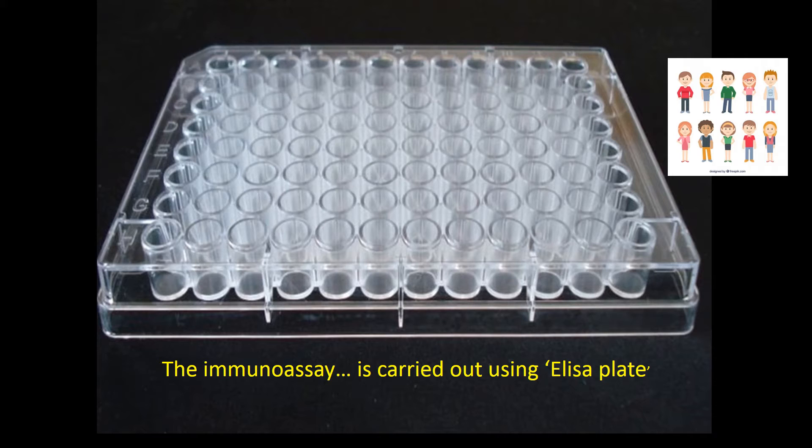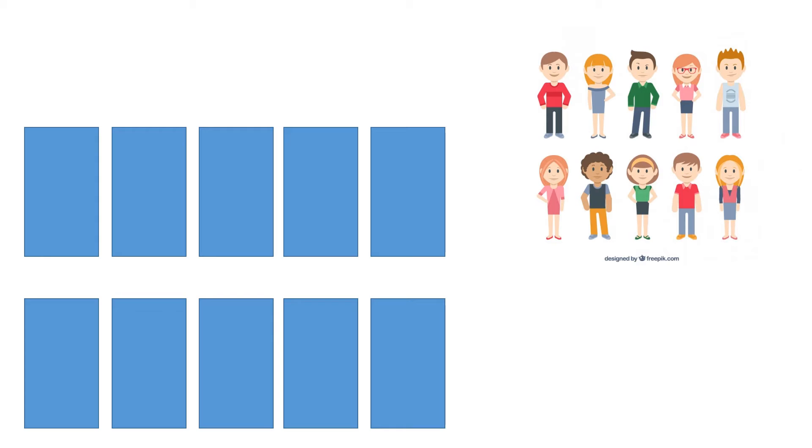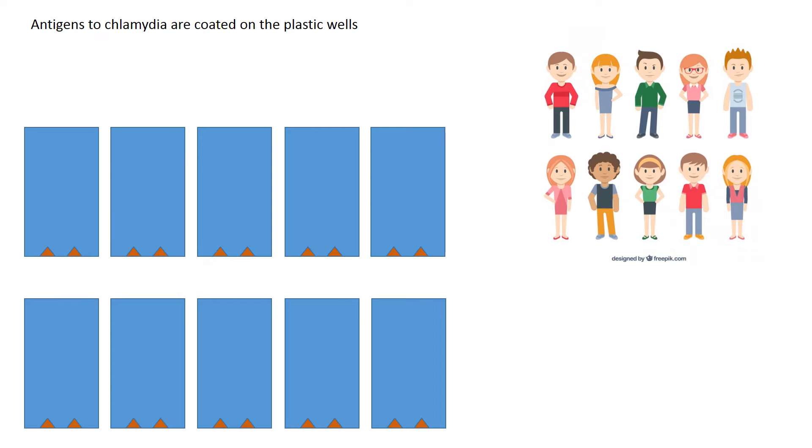Let's look to see how that is done. Let's just take these bottom 10 wells to represent the 10 people who we'd like to test. A scientist would coat the inner surface of each of those wells with antigens to a particular disease they wish to test for, in this case chlamydia.